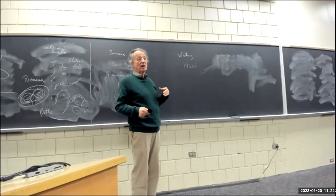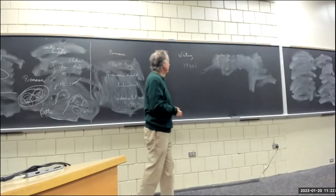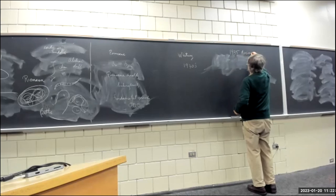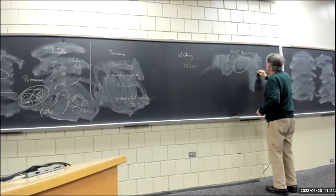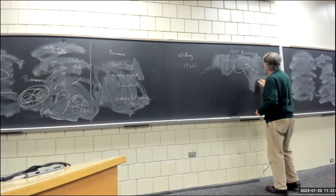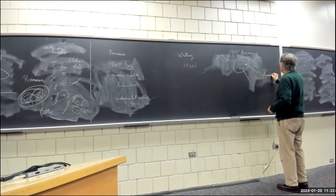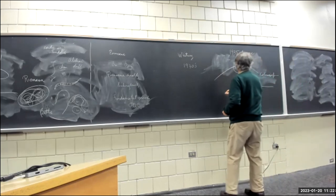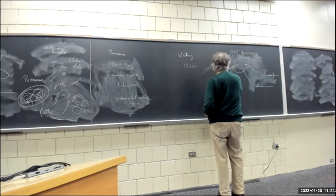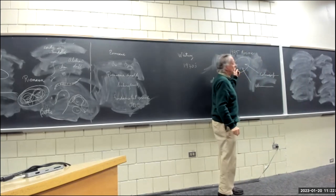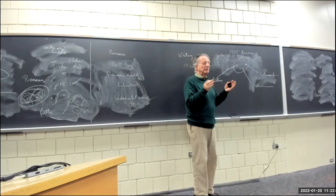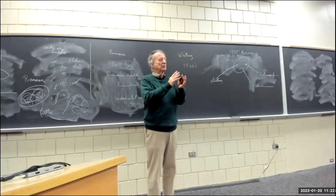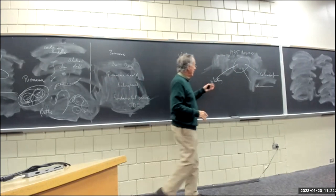There was a conference in Moscow in 1935, and Kolmogorov, Alexandrov, and Whitney came from Princeton. They all came with definitions of cohomology and with the wonderful fact that cohomology, as opposed to homology, has an algebra structure — a ring structure — and they all had formulas.